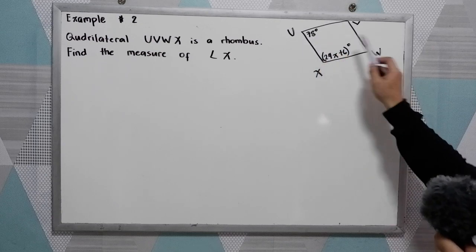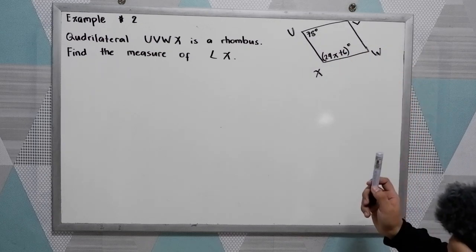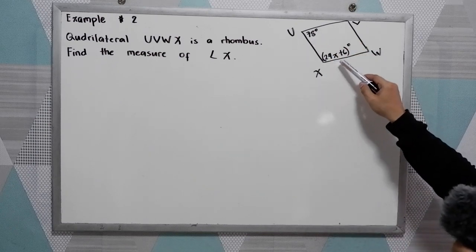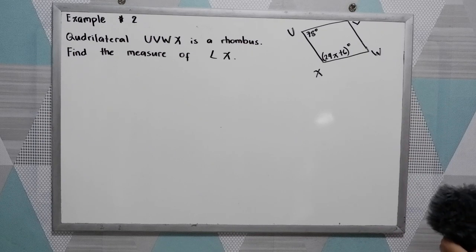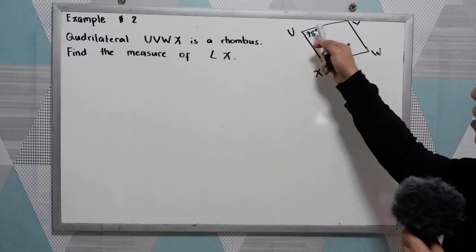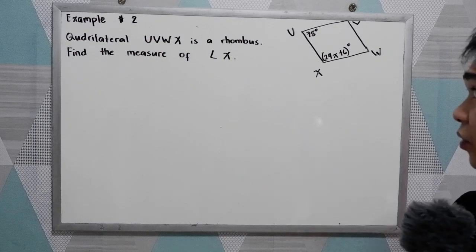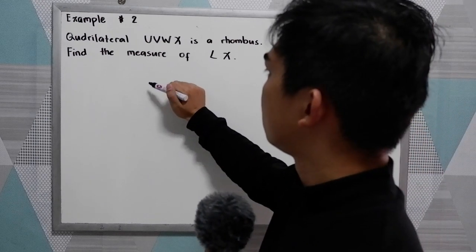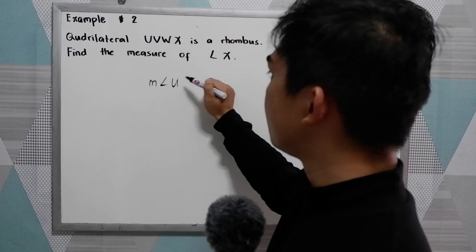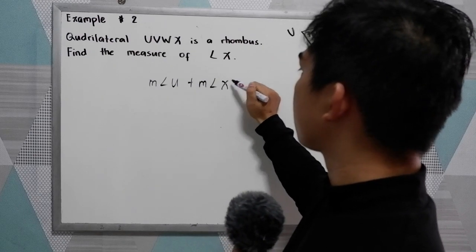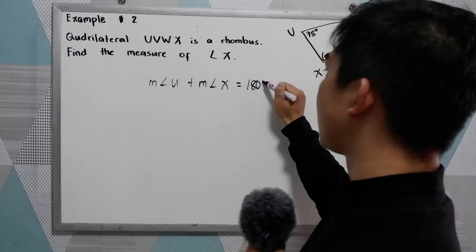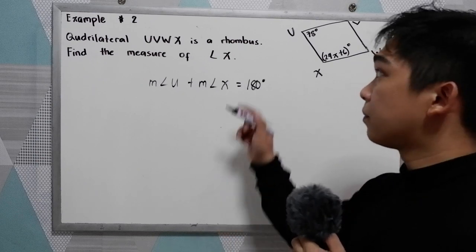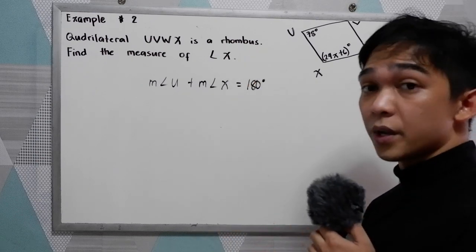Quadrilateral UVWX is a rhombus. Find the measure of angle X. We have rhombus UVWX where the measure of angle U is 78 degrees and the measure of angle X is 24X plus 6 degrees. We know that consecutive angles of a parallelogram are supplementary, and we can apply the properties of a parallelogram to a rhombus because a rhombus is always a parallelogram.